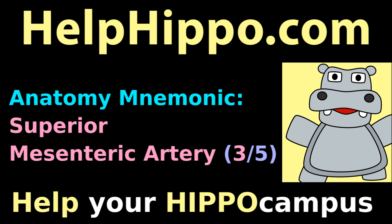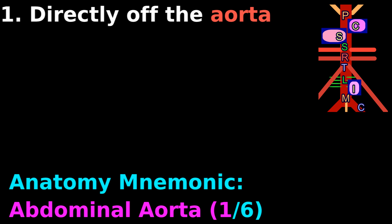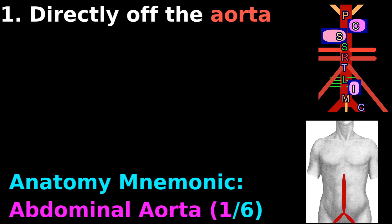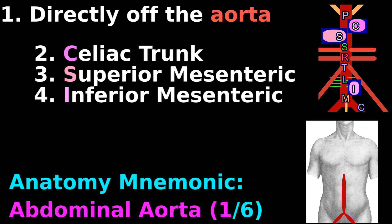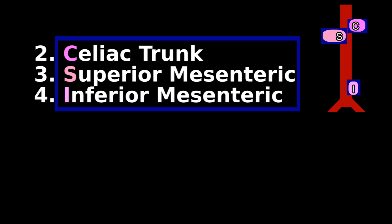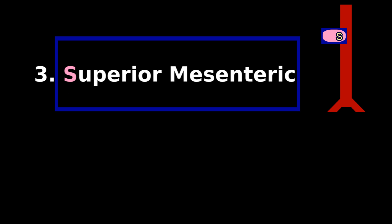Help Hippo, help your hippocampus. Our previous tutorials covered arteries coming directly off the abdominal aorta, and mentioned three big sub-complexities: CSI. This tutorial covers S for superior mesenteric artery.